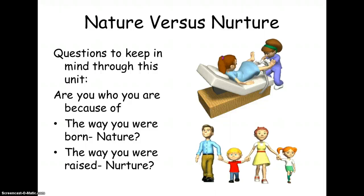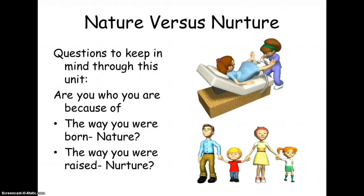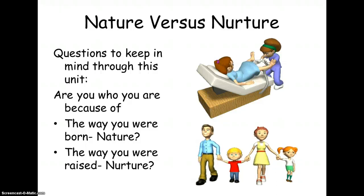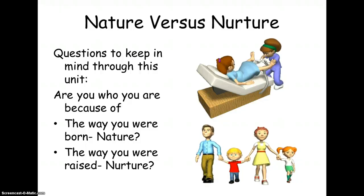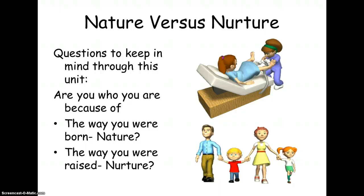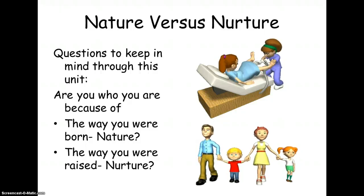That's the nurture argument — the idea that our behaviors come from our environment and we learn from our surroundings. Most people like to believe that nurture is the more important factor. We like to believe that if we try hard enough we can do anything. But nature does put serious restrictions on our development. Genetics can give us limitations, and no matter how much you alter your environment, you can't break through that nature barrier. The true answer lies in the combination of both.